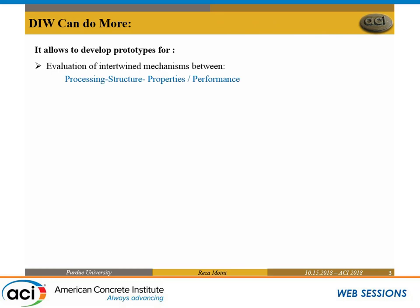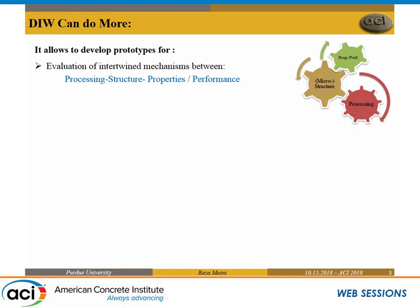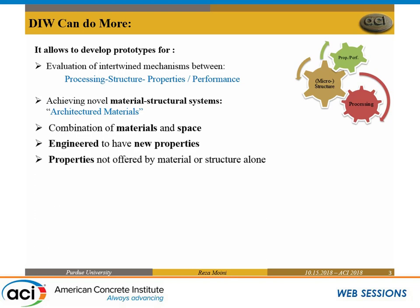Direct ink writing can do more than just fabrication for us. It allows us to look into interrelationships between processing, structure — or so-called microstructure — and properties and performance of materials. By doing that, it enables you to control the geometry, pattern, or architecture of the material, and you can create what I'll call an architectured material. This has been done for decades in other materials and ceramics, but I think this is the first time we're doing it with cement paste at a variety of scales.